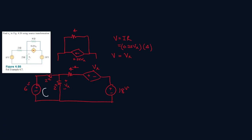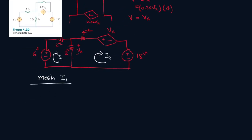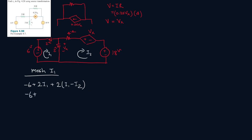Now let's do a mesh. Let's call this I1. Let's call this I2. Alright, so mesh I1, it will be minus 6 plus 2 I1 plus 2 I1 minus I2. So let's simplify this out more. Combine like terms. So minus 6 plus 4 I1 minus 2 I2.